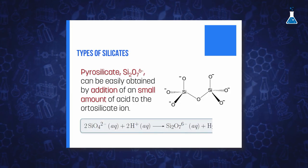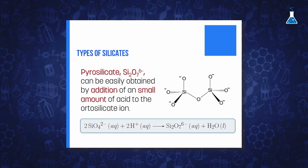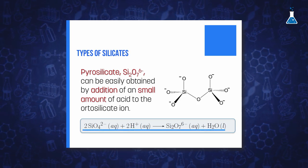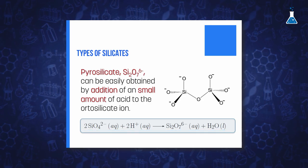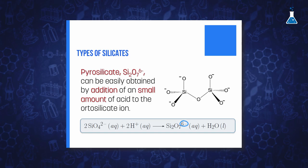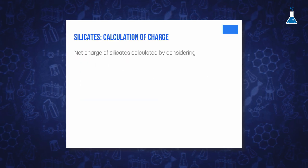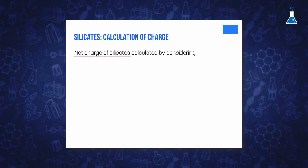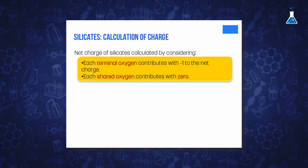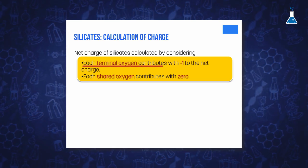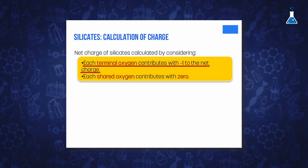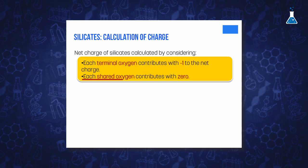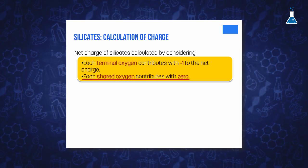Incidentally, it is possible to convert a nesosilicate to a sorosilicate by addition of an acid. As we see, the net charge of the sorosilicate is minus 6. In order to rationalize how we have obtained the net charge for the sorosilicate, we should consider the following aspects. Each terminal oxygen atom contributes with minus 1 to the net charge of the SiO4 unit, while each shared oxygen atom contributes with 0.